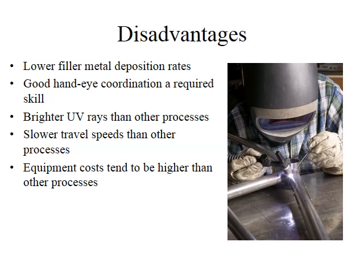Typical disadvantages of gas tungsten arc welding: except for automatic type GTAW, it is the slowest and most costly of the arc welding processes. GTAW must be given very careful control where high purity welds are required and tungsten inclusions could be detrimental, such as where liquid metals are involved. It requires a high level of operator skill and exceptionally good pre-weld cleaning, because current is generally DCSP which cannot effectively aid in cleaning during welding. Shielding gas can be lost when welding in high winds, and equipment is more expensive than shielded metal arc welding equipment, with brighter UV rays than other processes.